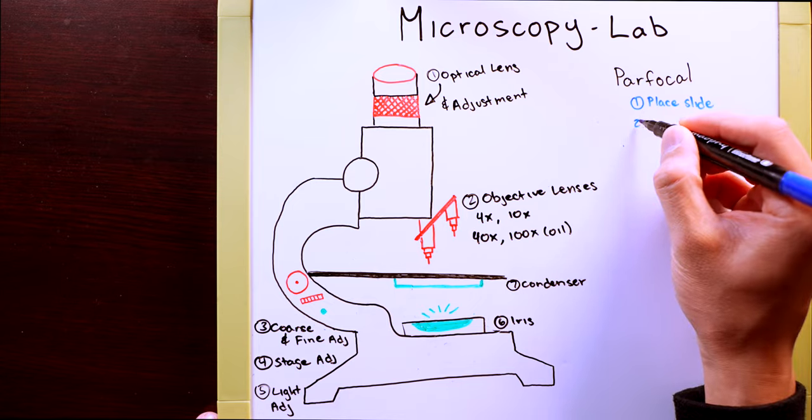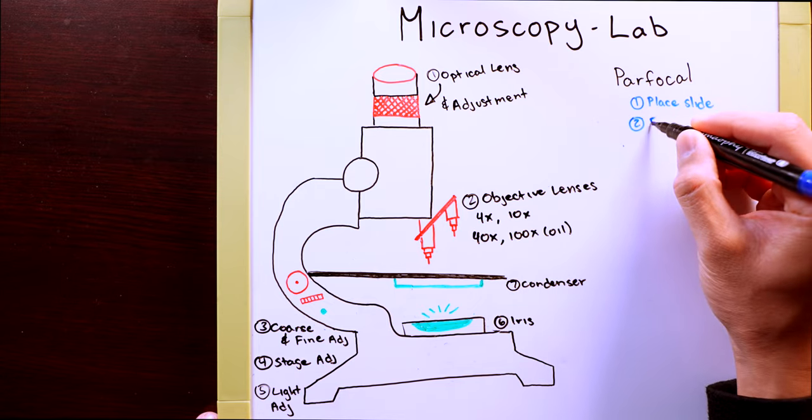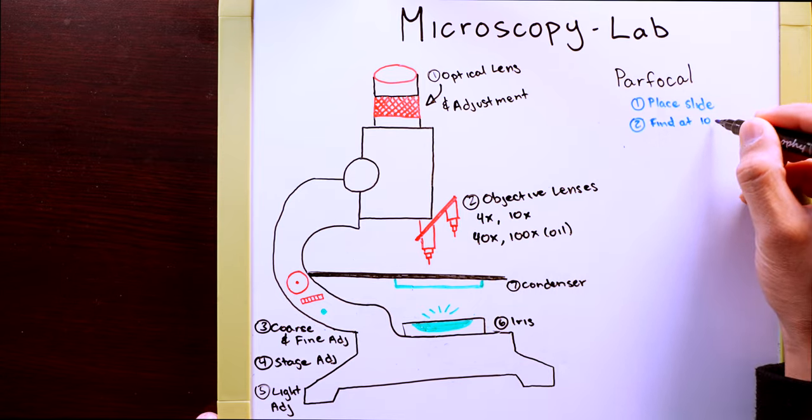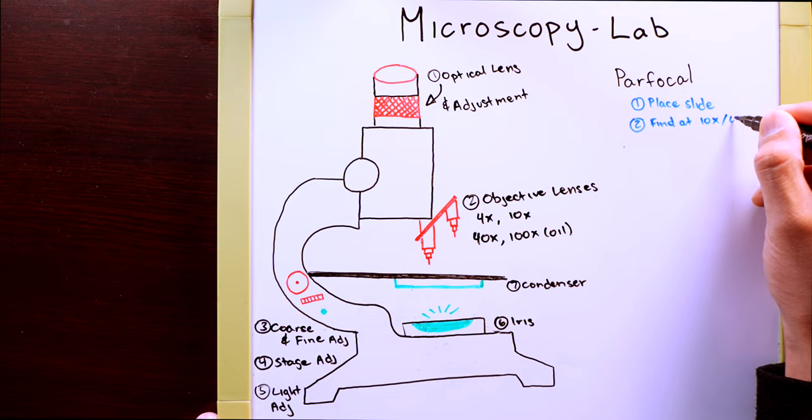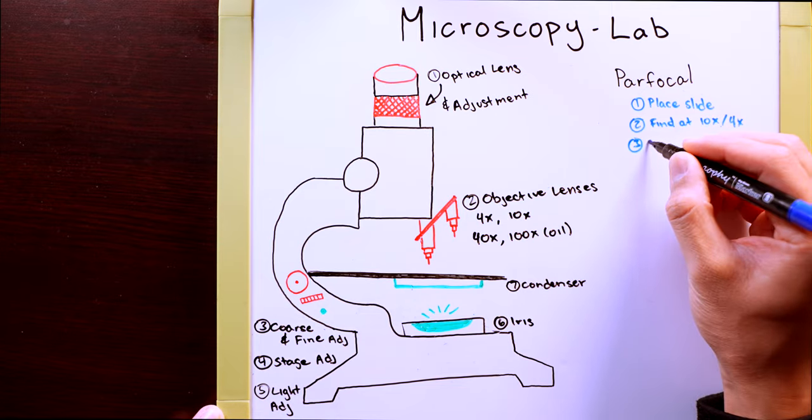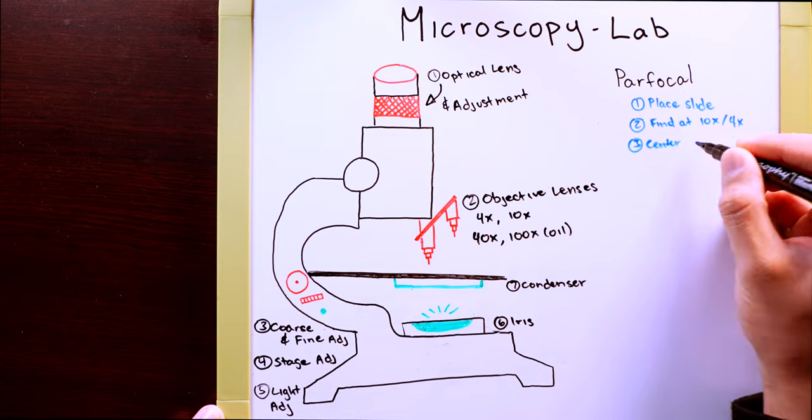Then you will want to find your microorganism at 10x. Your lab professor may tell you to start at 4x. Then you will want to center and focus your slide.